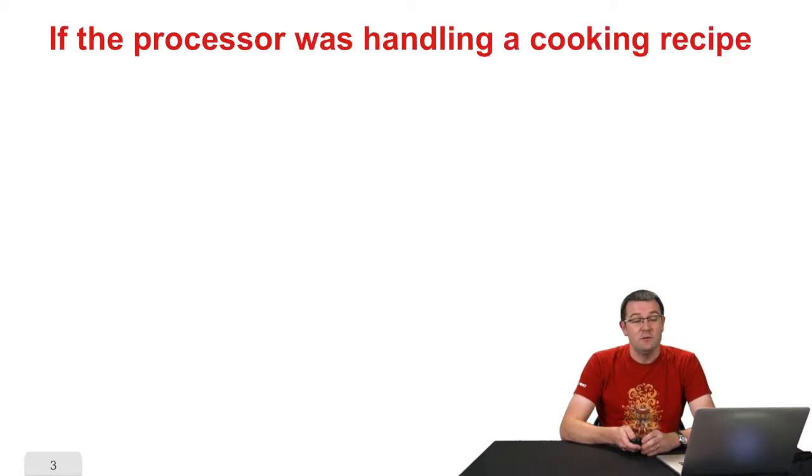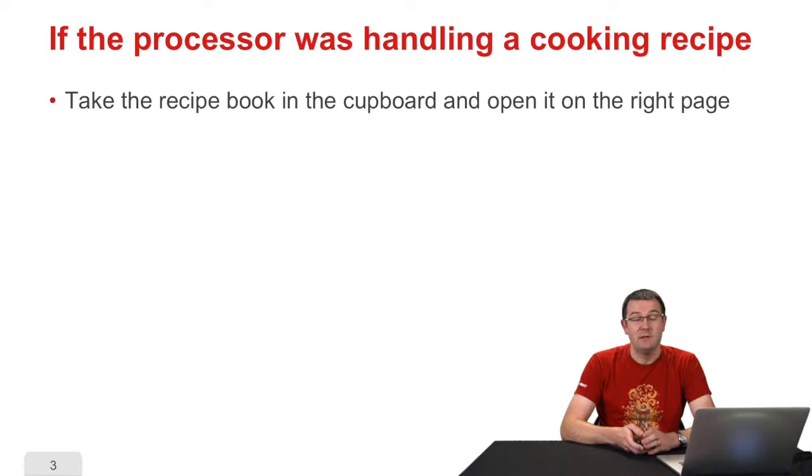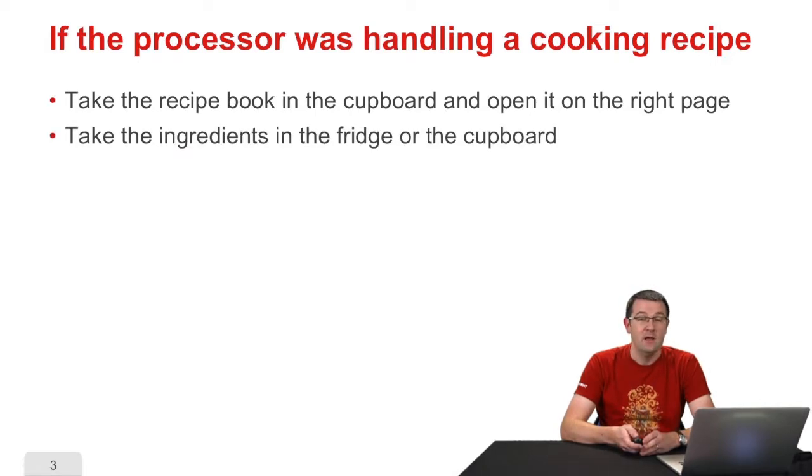So if the processor handled the cooking recipe, what would it do technically? First, it is going to fetch the recipe book from the cupboard, and it would open the book at the right page to find the program, the recipe it has to execute. Then, it would go to the fridge or the cupboard to find the ingredients and draw them closer to him, so in the memory.